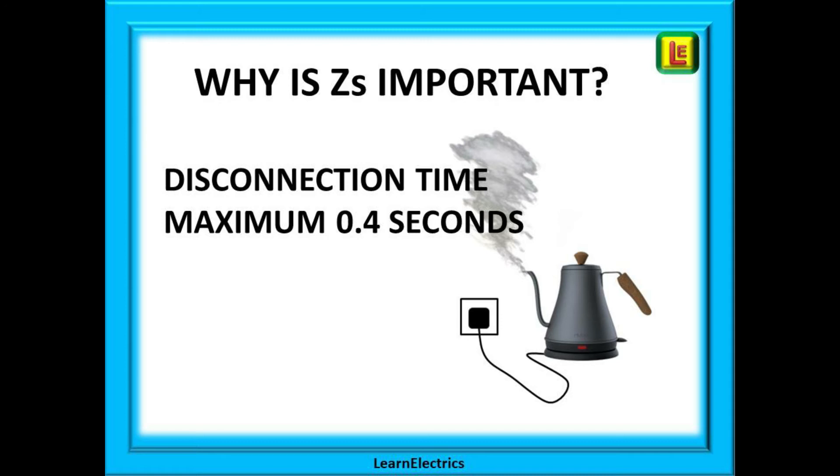The wiring regulations tell us that a fuse or breaker in a domestic final circuit such as sockets, lights, shower, etc., should disconnect the supply within 0.4 seconds, and to achieve this the ZS or impedance of that circuit must be below a certain number that is given in tables within the regulations book.